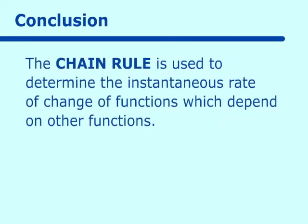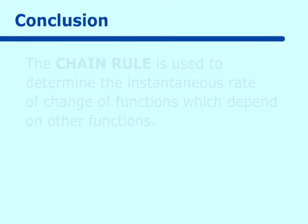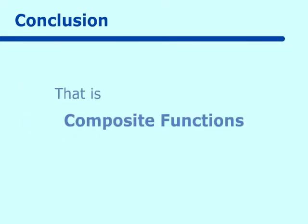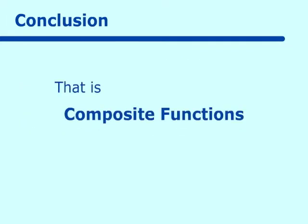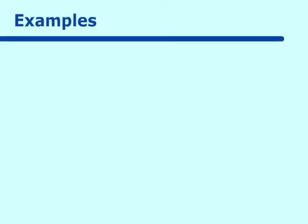The chain rule is used to determine the instantaneous rate of change of functions — meaning the first derivative — which depend on other functions. That means we are dealing with composite functions, f of g of x. Let's try some examples. The first one: f of x equals cosine of e to the x. There is our g of x function, the e to the x, and the cosine is the outer f function.